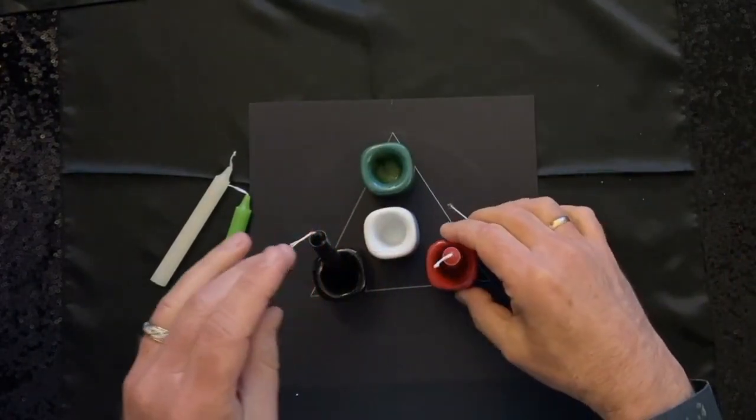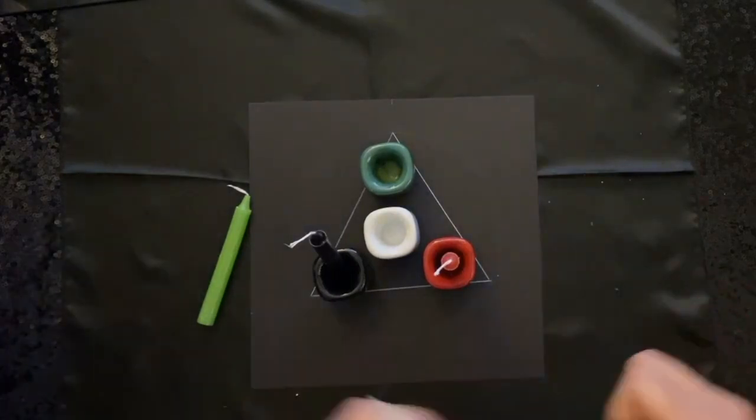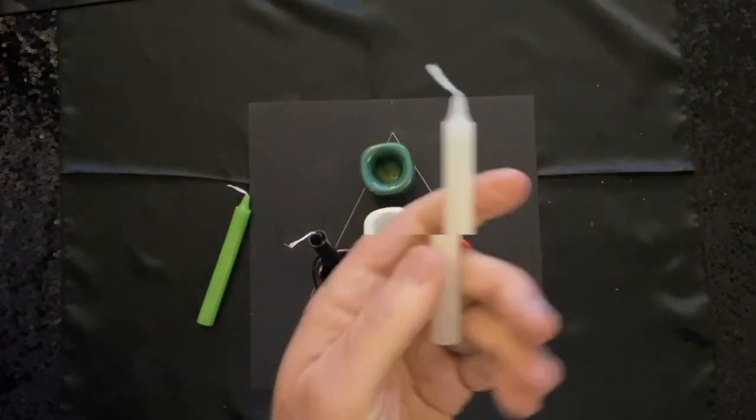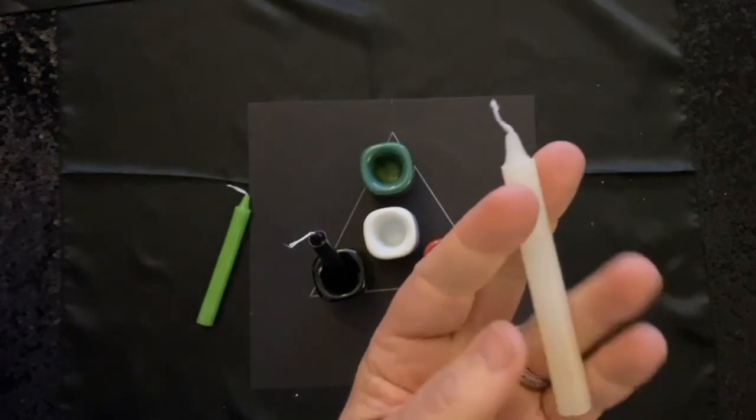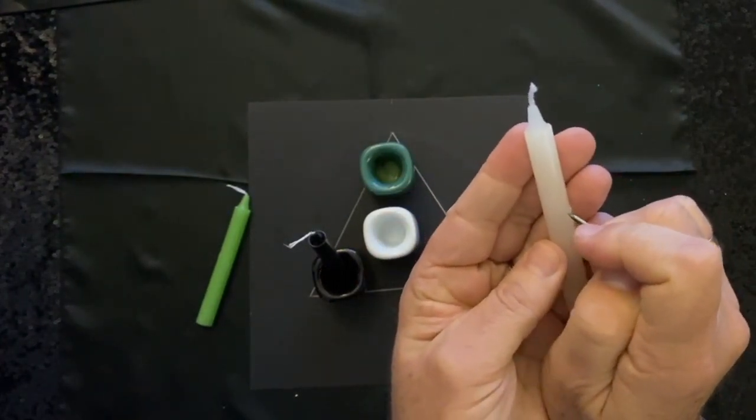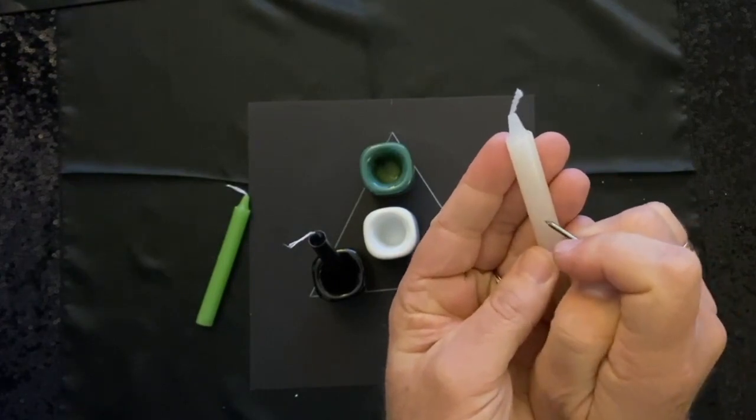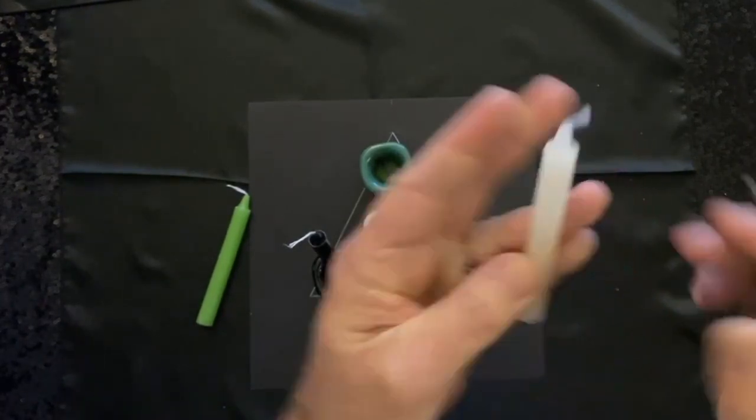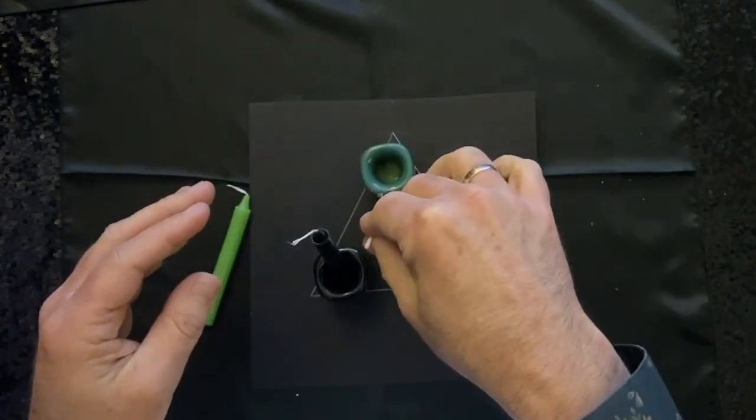And then we're going to take our white candle and we're going to think about the power to change, the power of transformation. And we're going to inscribe the symbol of the moon right on here. We're going to stick that candle there in the center.